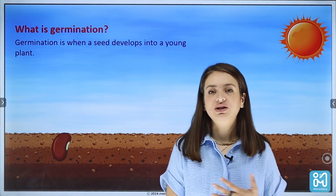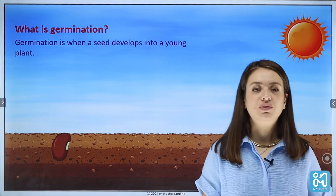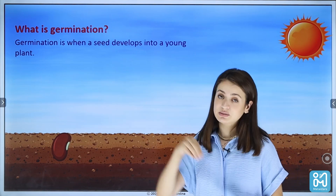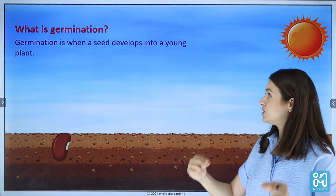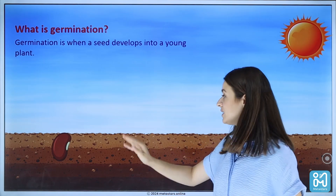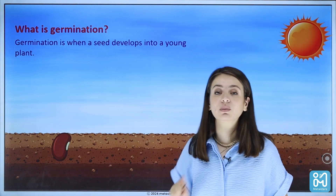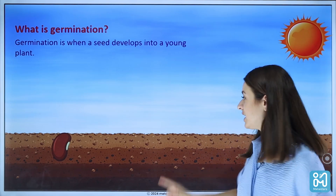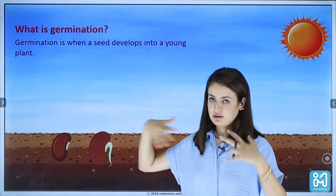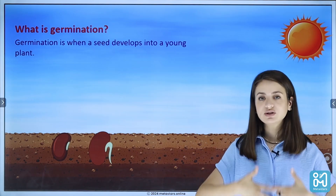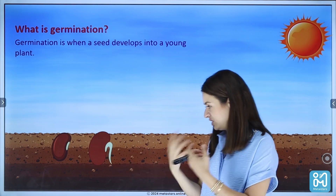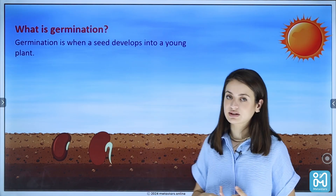Now what is germination? When we say a seed has germinated, what do we mean by that? Here as you can see, here is the seed — it is buried under the ground. The process by which a seed develops into a new young plant is called germination. So this seed will develop into a young plant. After the seed has been germinated, or during the process of germination, the seed will start developing some roots as you can see here.